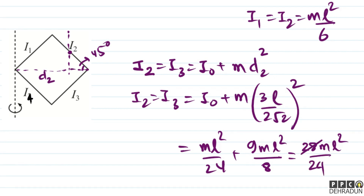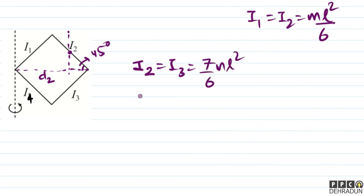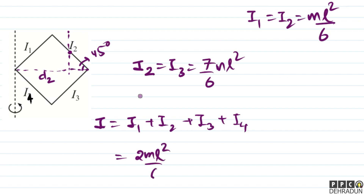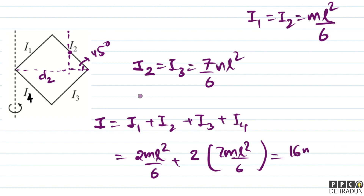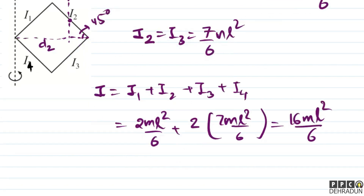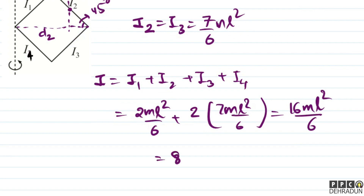Simplify करने पर 28/24 = 7/6, तो I₂ = I₃ = 7ML²/6। अब final moment of inertia: I = I₁ + I₂ + I₃ + I₄ = 2×(ML²/6) + 2×(7ML²/6) = (2+14)ML²/6 = 16ML²/6 = 8ML²/3।